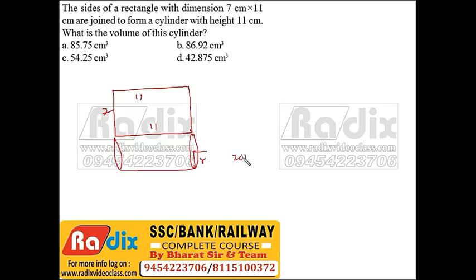If radius is r, then 2πr is given by 7, so r would be 49 by 44. Now volume of the cylinder is πr² times height: π times (49/44)² times 11.